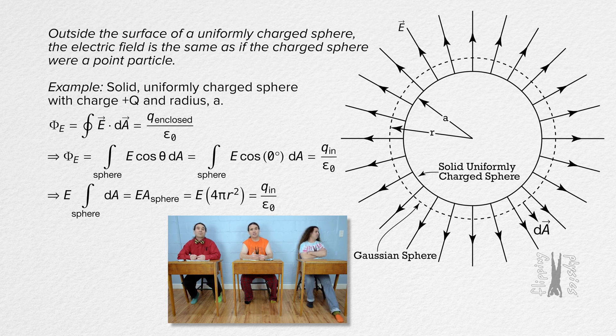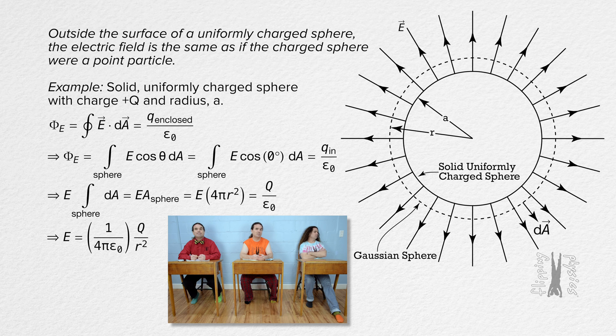The charge inside the Gaussian sphere is the charge on the charged sphere or capital Q. We derived that the electric field outside a charged sphere equals the inverse of 4 pi times the permittivity of free space, all times the charge on the sphere divided by the square of the distance from the center of the sphere to the location of the electric field.